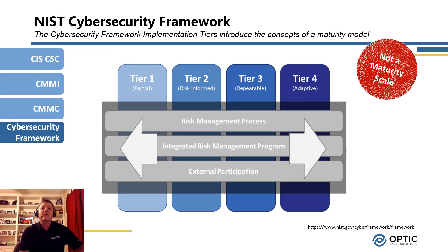The fourth standard is actually not a cyber maturity model at all — it's the NIST Cyber Security Framework. The NIST CSF was created to help us understand the key components of a cyber security program. Within that, NIST introduced what they call implementation tiers to show different ways you can implement a cyber security program. The tiers start at tier one — a partial or ad hoc implementation — and progress through tier three, a repeatable process with policies and procedures, up to tier four where you're being adaptive and improving cyber security processes across the organization.